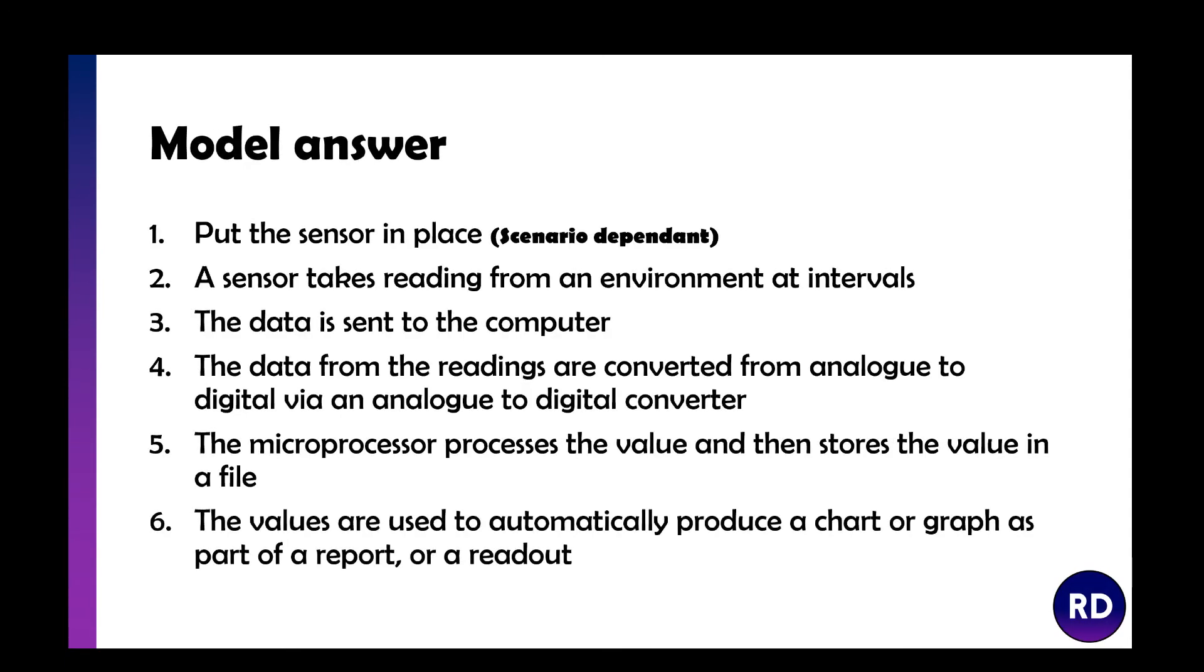Now if you were given a question about measurement applications, a model for a sort of answer would be: you put the sensor in place depending on the scenario, so your answer would change. The sensor then takes the reading at intervals. It is sent to the computer. The data from the readings are converted from analogue to digital via an ADC. The microprocessor, or the computer, processes the value and stores the value in a file, and the values are used to automatically produce a chart or graph as part of a report or readout.